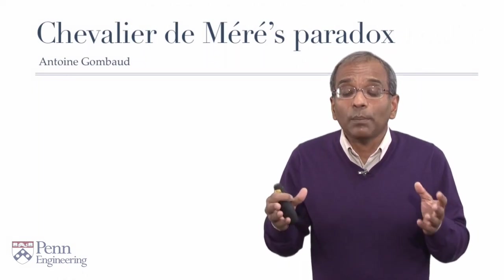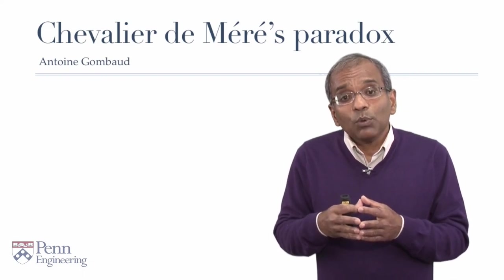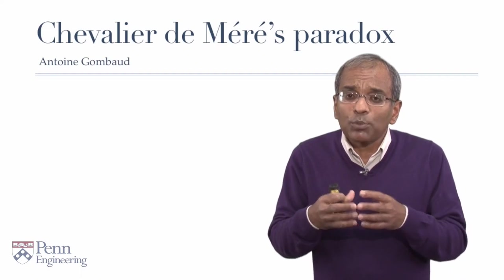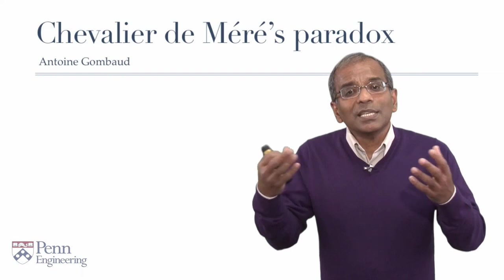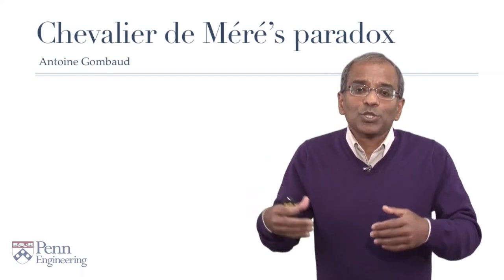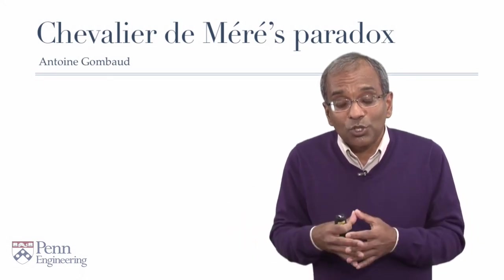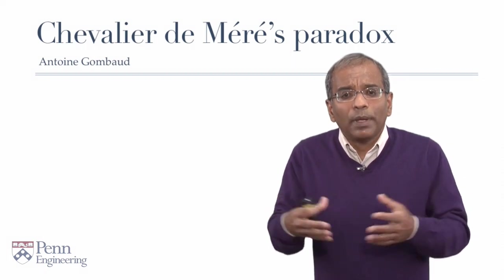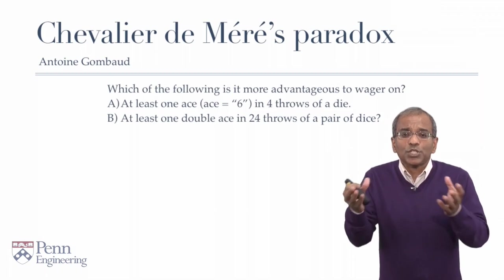A name associated with this is that of the Chevalier de Méré. His real name was Antoine Gombaud. He was a writer and also an intellectual, a prominent salon theorist. And a problem that he posed has now come to be associated with him. It's called de Méré's problem or de Méré's paradox. It's a very simply worded problem, and it was known well before de Méré. And it can be stated in simple terms, as you see on the screen.